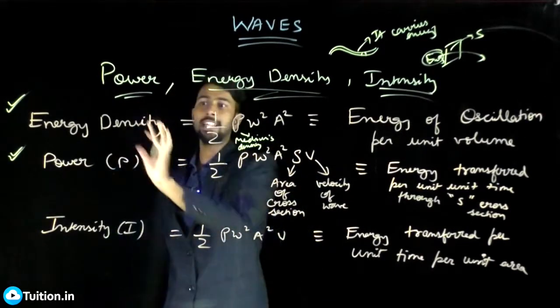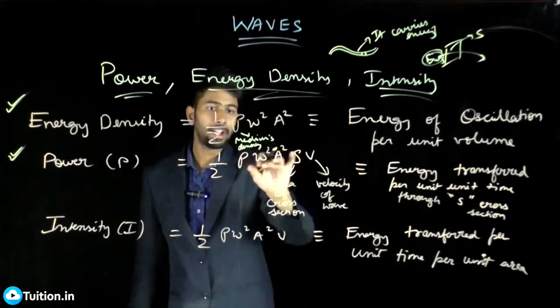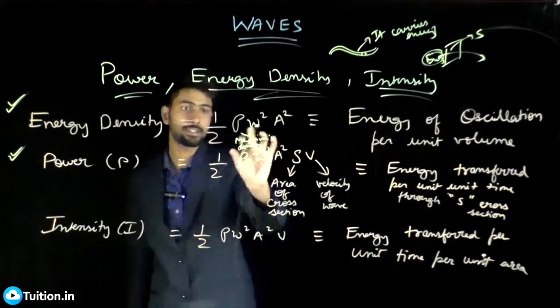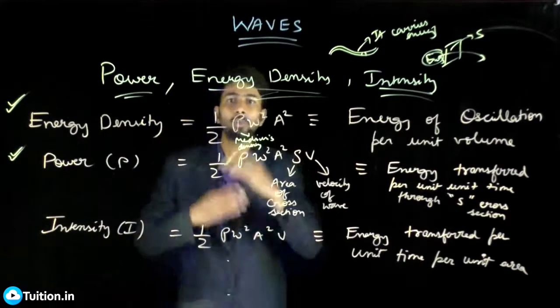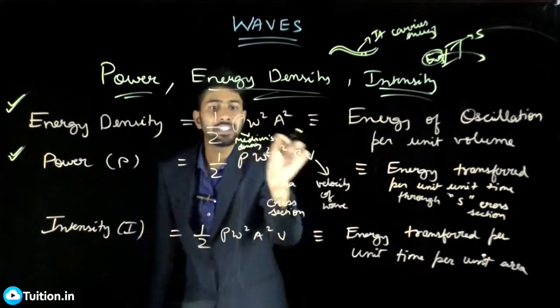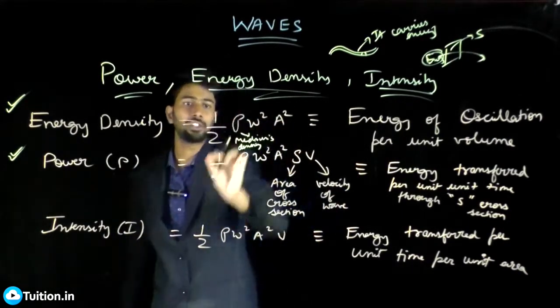It is very simple. Just take the energy density: half rho omega square a square. You already know what rho is - it is the medium's density. If I am talking about string here, it is the density of the string. If I am talking about sound wave and air, this is the density of air.